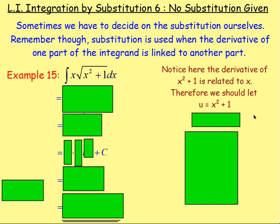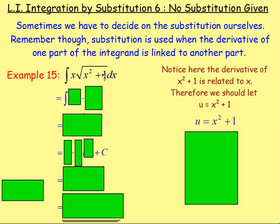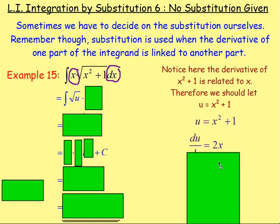Let u equal x squared plus one. Notice that the derivative of x squared plus one, which is 2x, is related to x because they both have an x. From there, the square root of x squared plus one just becomes the square root of u. But we've also got an x and a dx, and we need to write it all in terms of u. So we differentiate u with respect to x: du/dx equals 2x. Multiply both sides by dx, so du equals 2x dx.